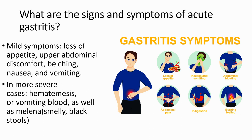Signs and symptoms: if the patient has mild symptoms, they may show loss of appetite, upper abdominal discomfort, belching, nausea, and vomiting. In more severe cases, a patient can present with hematemesis — vomiting blood — as well as melena.